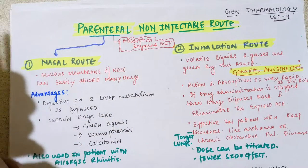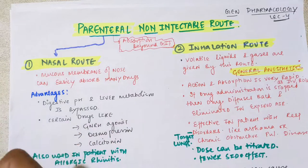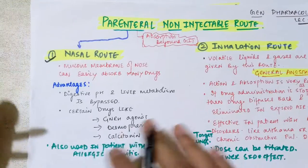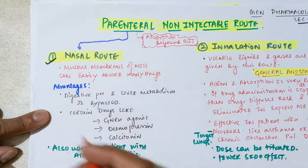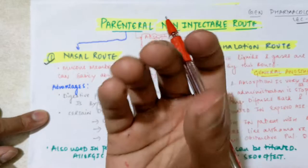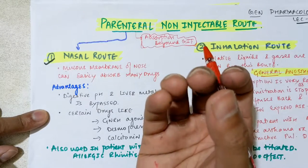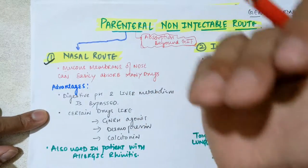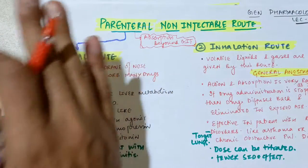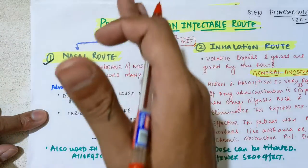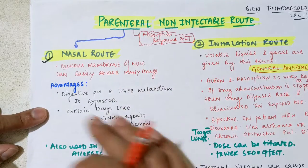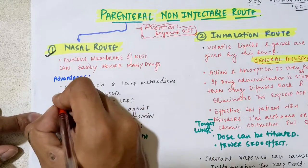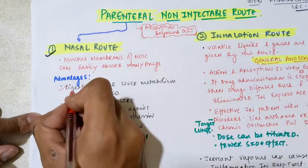Let's start with the first route: the nasal route. In the nasal route, we actually administer the drug through the mucous membrane. Inside the nose there are small blood vessels and capillaries through which you can administer the drug. From there it will be directly absorbed into the systemic circulation, so you don't have to go through first pass metabolism.